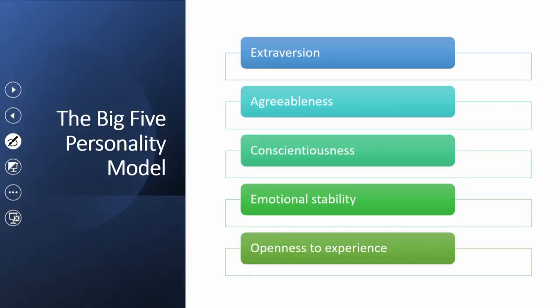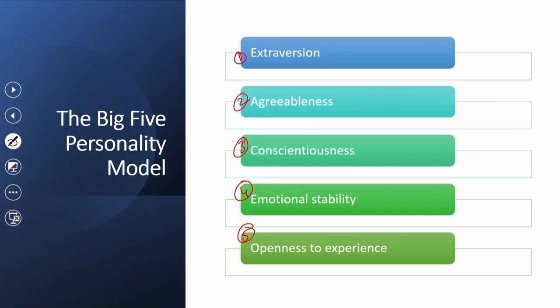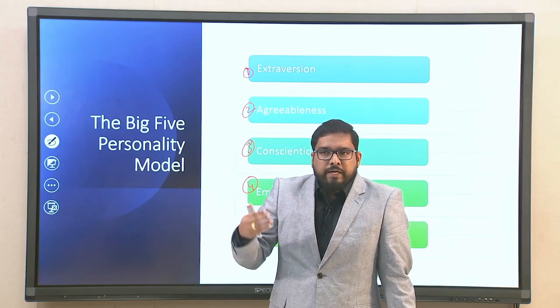The next important model is the Big 5 personality, generally referred to as the OCEAN model. There are specifically five factors. The order may vary across textbooks, but these are essentially the five: extraversion, agreeableness, conscientiousness, emotional stability, and openness to experience. In some textbooks you start from openness — that is why OCEAN stands for Openness, Conscientiousness, Extraversion, Agreeableness, and Neuroticism.